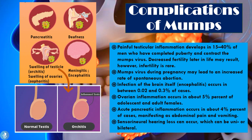In pregnant women who contract the mumps virus, there may be an increased rate of spontaneous abortion — they can suffer a miscarriage. The mumps virus can also cause infection of the brain itself, called encephalitis, though this occurs in only 0.02 to 0.3 percent of cases. Female patients may suffer from ovarian inflammation, called oophoritis, which occurs in about 5 percent of adolescent and adult females. Some patients may also suffer from acute pancreatic inflammation, occurring in about 4 percent of cases, which manifests as abdominal pain and vomiting.